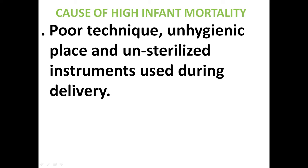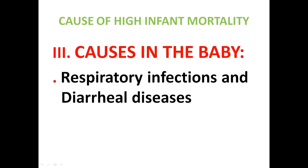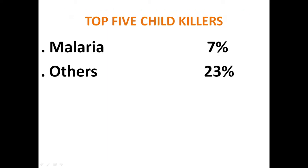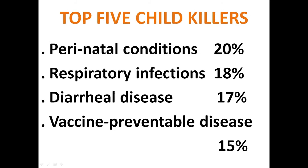In the baby itself, leading causes are respiratory tract infections, diarrheal diseases, and malnutrition. The top five child killer diseases are: perinatal conditions accounting for 20 percent of deaths, respiratory infections 18 percent, diarrheal diseases 17 percent, vaccine preventable diseases 15 percent, malaria seven percent, and all other diseases including tuberculosis contributing 23 percent.